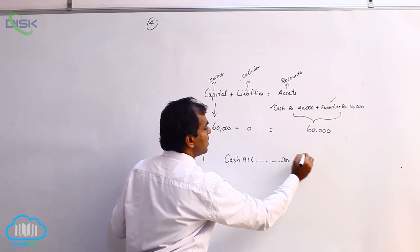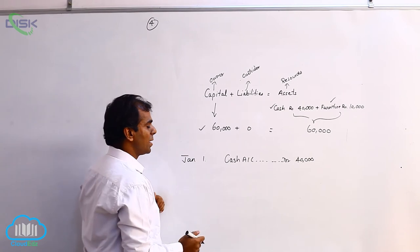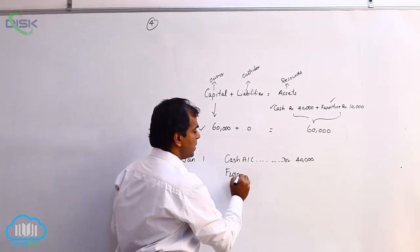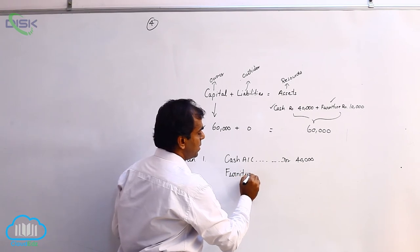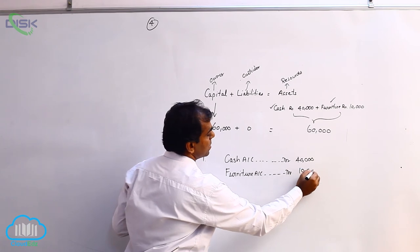On the same day the business is also getting furniture. Furniture is also a real account and it is coming in, so debit what comes in. So furniture account debit 10,000.